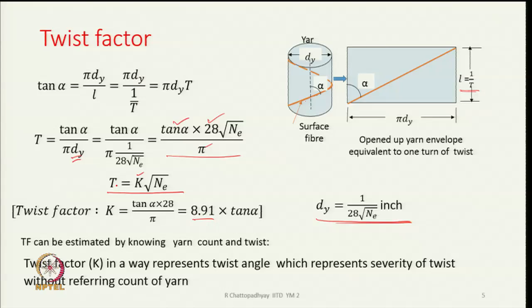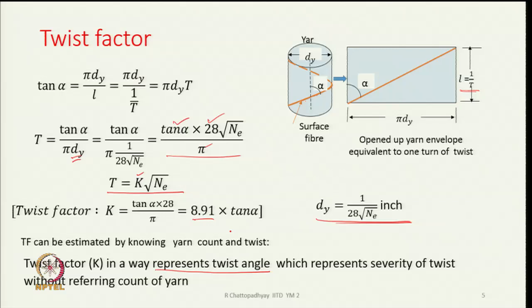Twist factor k represents the twist angle since k = 8.91·tan(α). It represents the severity of twist without referring to the count of yarn. When comparing yarns of different counts, we compare their twist factors rather than turns per unit length, because twist factor gives a true idea of the character of the yarn.